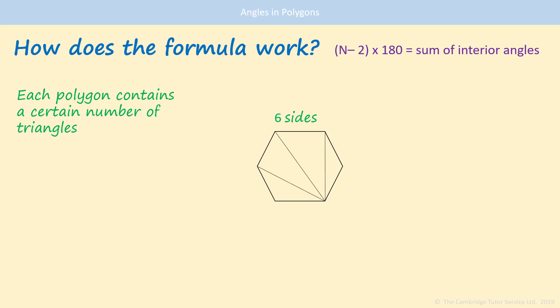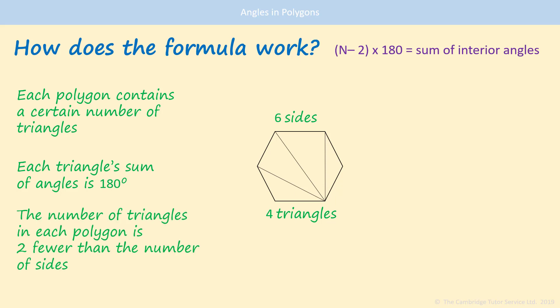So we separate it into the triangles. You'll see that there's 1, 2, 3, 4 triangles in that hexagon. The sum of angles of each of those triangles is 180 degrees. The number of triangles is always 2 fewer than the number of sides.